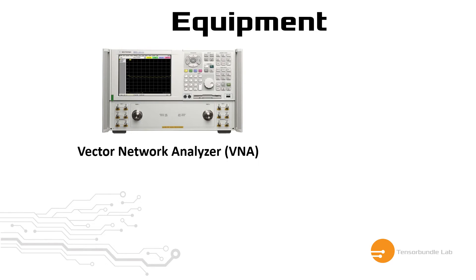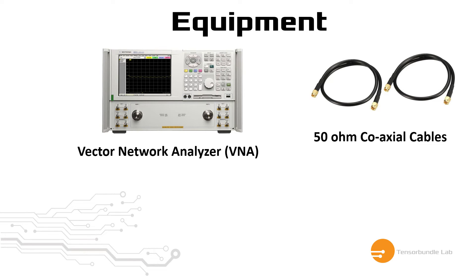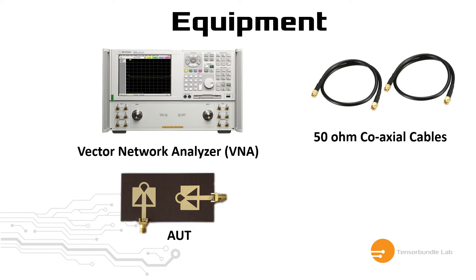To measure this mutual coupling, we're going to use a vector network analyzer, or VNA in short. Make sure your VNA has at least two ports. We'll also need a couple of 50 ohm coaxial cables and the antenna under test, or AUT.